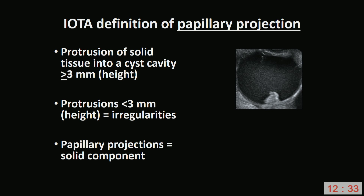The IOTA definition of a papillary projection is also extremely important, because if you don't get this right, the IOTA methods will not work in your hands. A papillary projection is a protrusion of solid tissue into a cyst cavity with a height of at least 3 millimetres. Protrusions with a height less than 3 millimetres are not classified as papillary projections. A papillary projection is a particular subgroup of solid component.